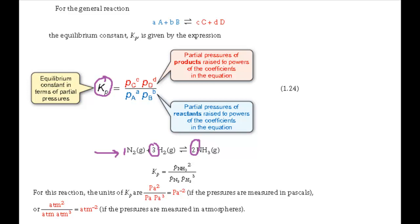The units of Kp depend on the particular reaction and the units used to measure the pressure. For the ammonia reaction, if the pressures are measured in Pascals, the units of Kp are Pascals to the minus 2. If the pressures are measured in atmospheres, the units of Kp are atmospheres to the minus 2.